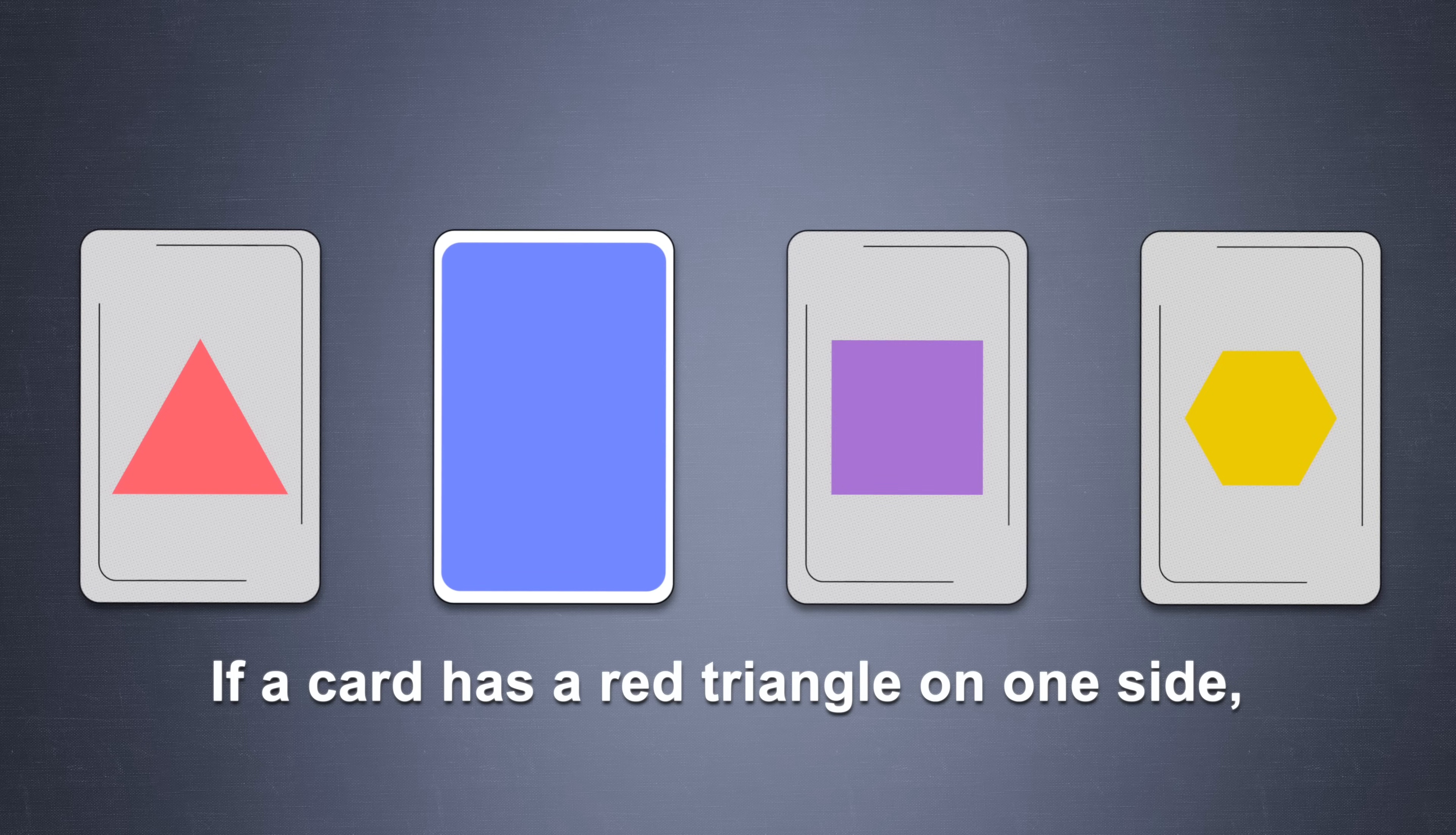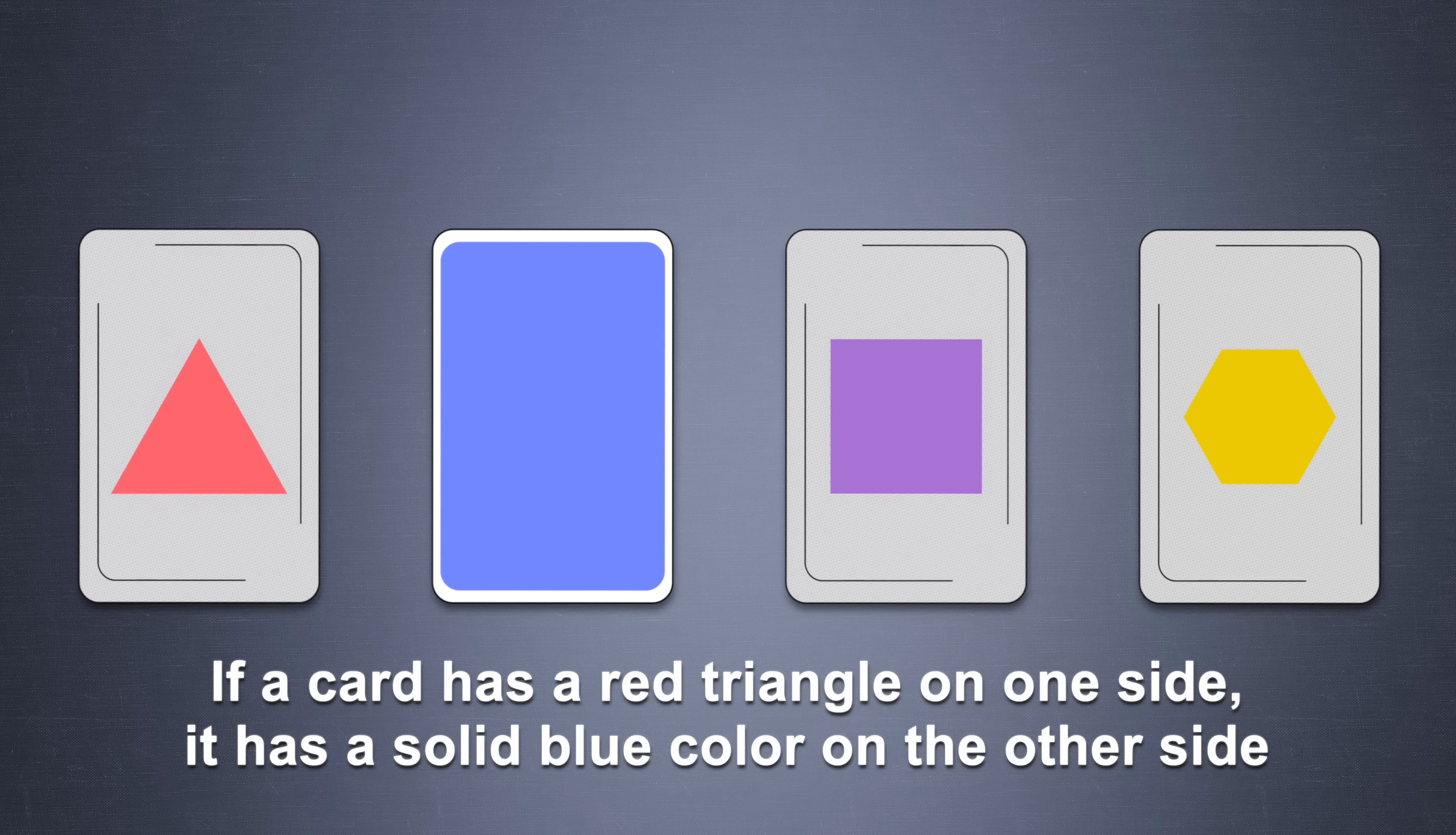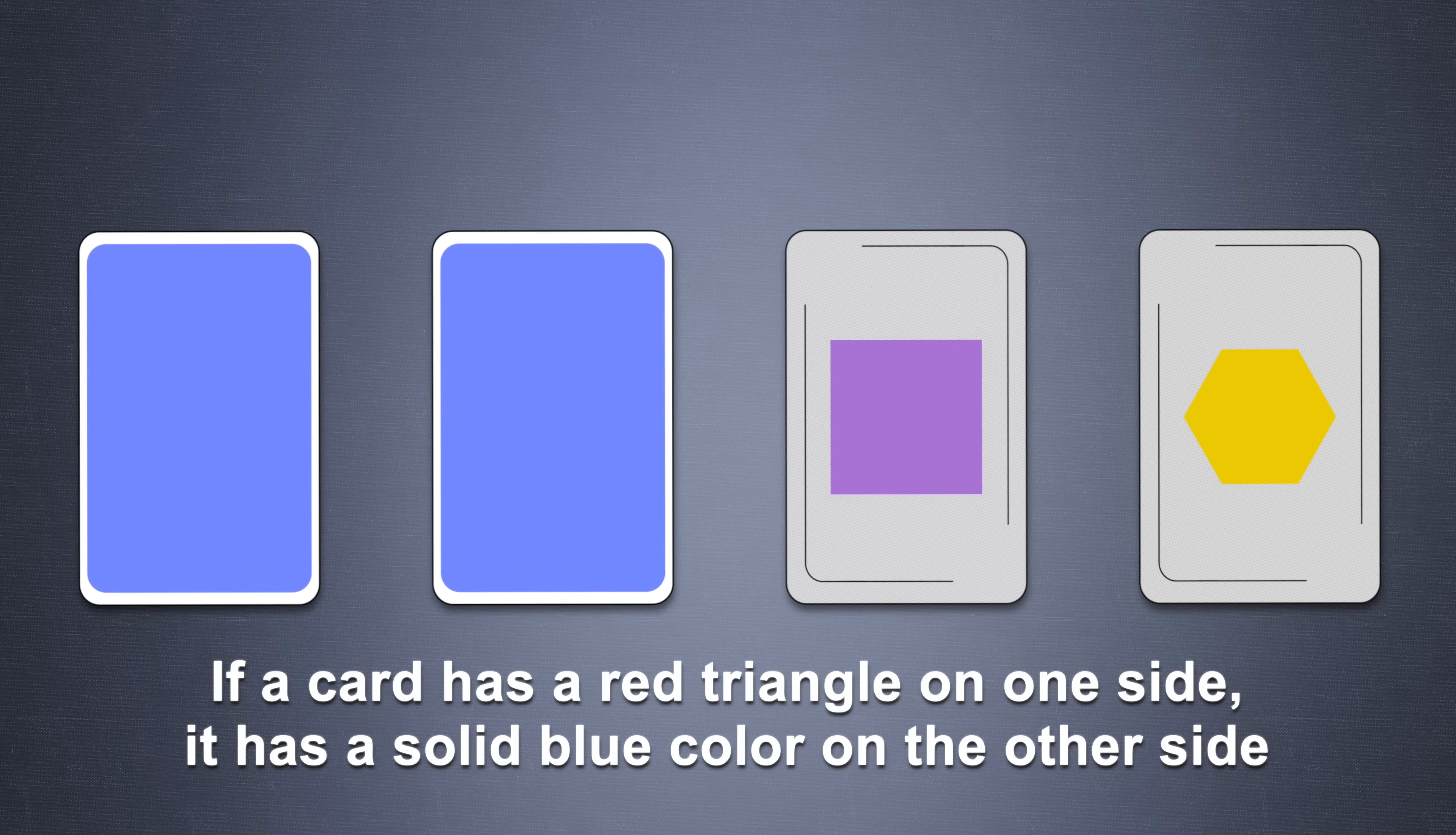The rule is, if a card has a red triangle on one side, then it has a solid blue color on the other side. Which cards do you flip? You'd flip the red triangle card to check if the other side is blue or not, and that's all.